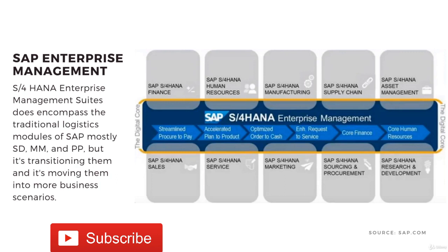The new Enterprise Management is broken down into: Procure to Pay, Plan to Produce, Order to Cash, and Request to Service — and all of those are across new devices and across new services, breaking into new markets.